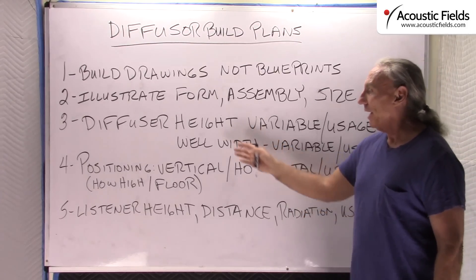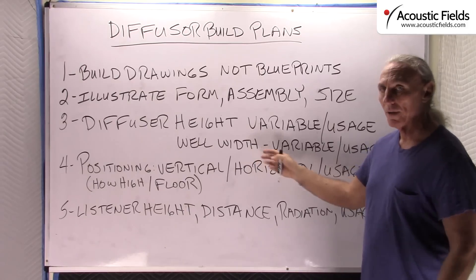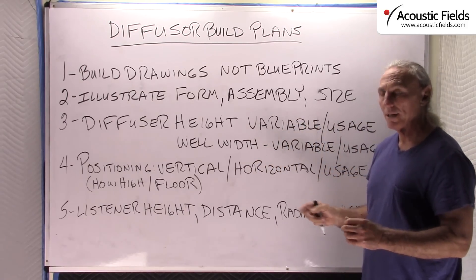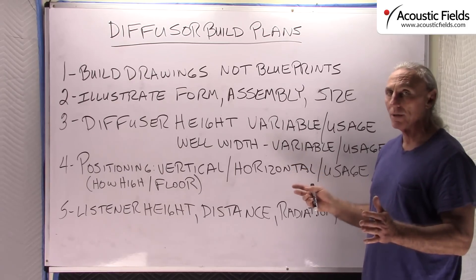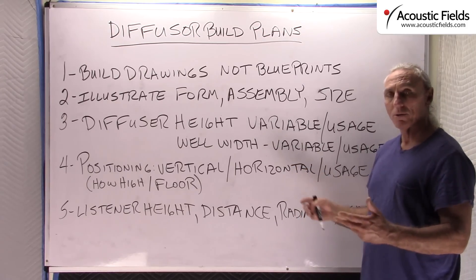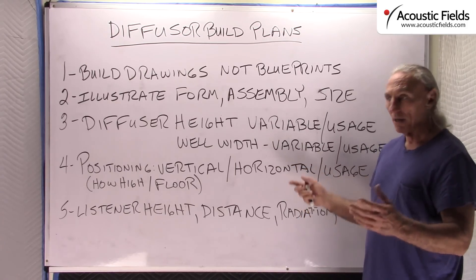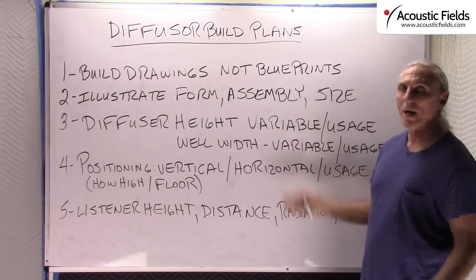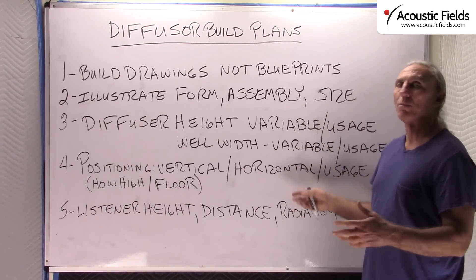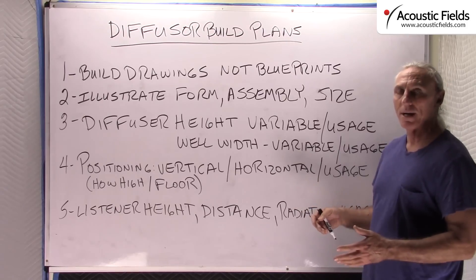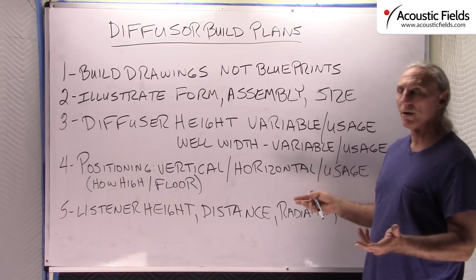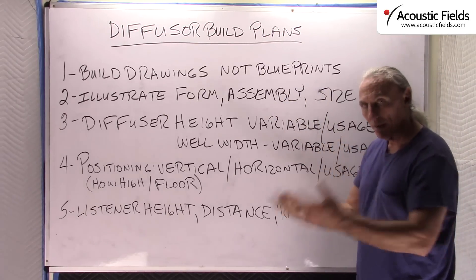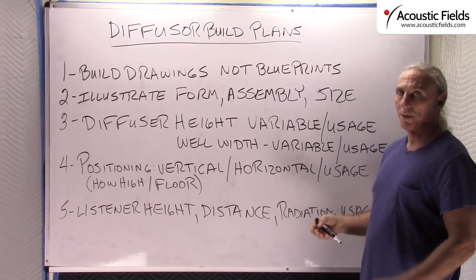The diffuser height varies. You can vary the well width and the construction — the way you build the box. Everybody does joinery differently. All you experienced woodworkers out there use different joinery and different materials. So there's no way to draw out blueprints for all of that because there are too many variables. The build drawings give you an idea of what's involved and what you have to go through to build them, and you can buy your materials from that.